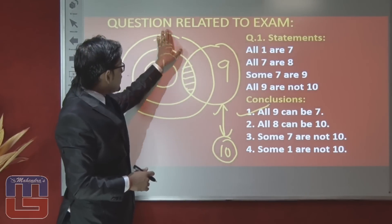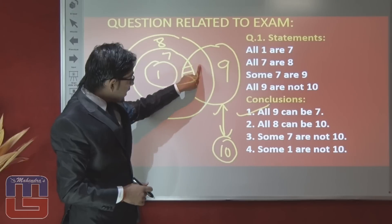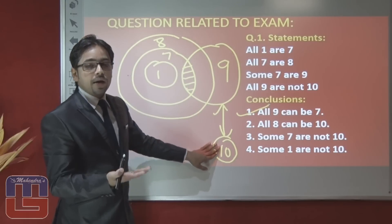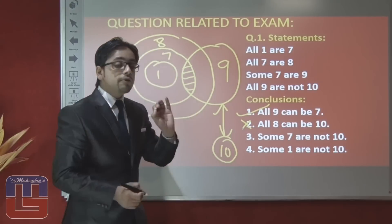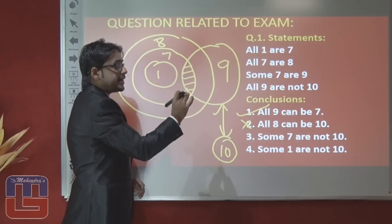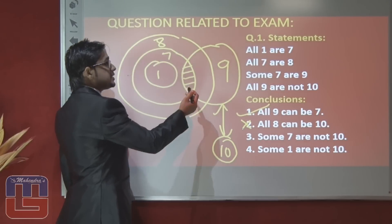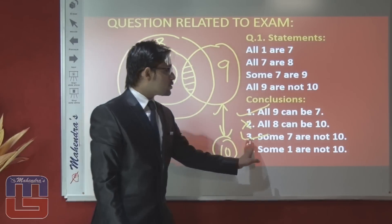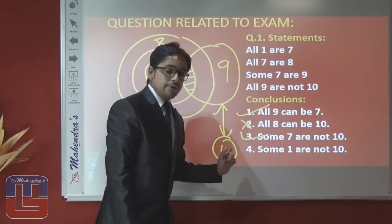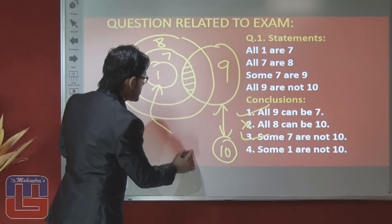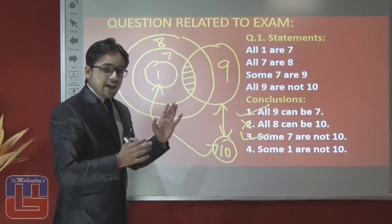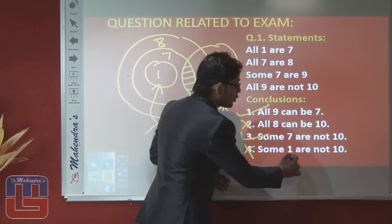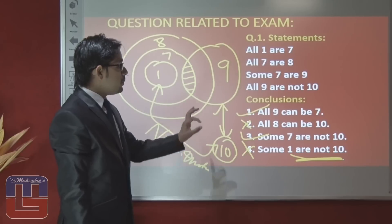Conclusion 3: 'Some 7 are not 10' — some 7 are 9, and all 9 are not 10, so some 7 are not 10 — this conclusion is definitely true. Conclusion 4: 'Some 1 are not 10' — no information is given by the examiner regarding 1 to 10 directly. If we don't have any information regarding these two entities in definite manner, the answer is false. So the right answer of this question is conclusions 1 and 3 are true.